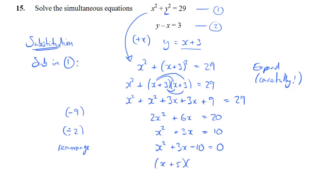And if you're not sure, you can just spend a bit of time looking at the factors of 10. There's only two factor pairs. So it shouldn't take too long to get these ones. So now that's factorized, it gives me my 2x values. If the first bracket is 0, x would be minus 5. If the second bracket is 0, x would be 2.